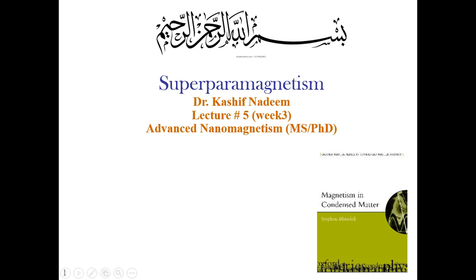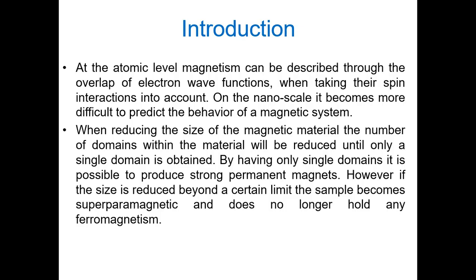Welcome to lecture number five of advanced nanomagnetism. In this lecture we will talk about superparamagnetism and what we want to learn about it in nanomaterials. At the atomic level, magnetism can be described through the overlap of electron wave functions, as we already discussed in the last lectures, taking spin interactions into account. At the nanoscale it becomes more difficult to predict the behavior of magnetic nanoparticles due to surface effects and finite size effects.